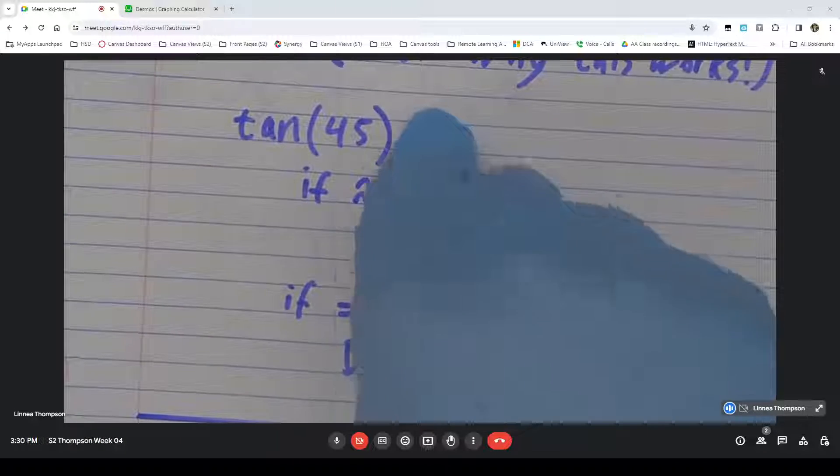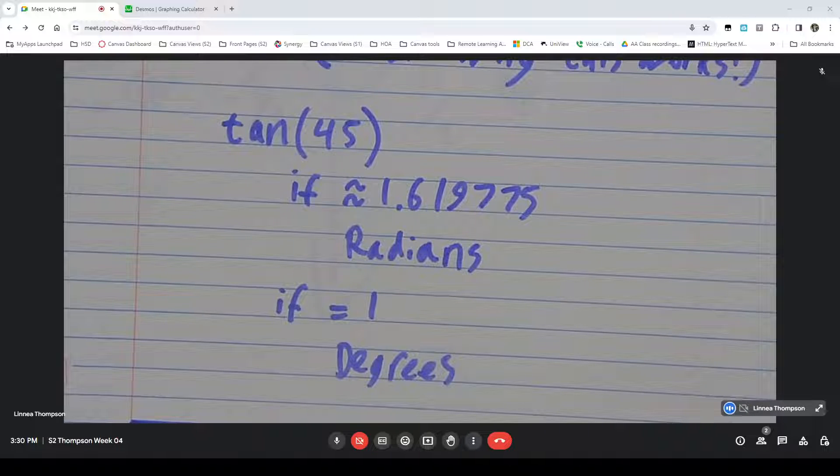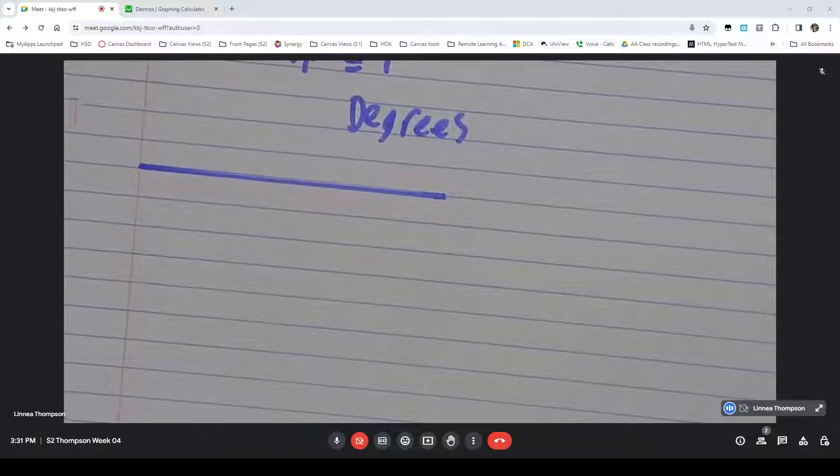The tangent of 45 specifically is what's equal to 1. So you might be wondering, why? Why is the tangent of 45 equal to 1 when so many tangents are just long decimal numbers? So now I'm going to talk a little bit about special triangles.